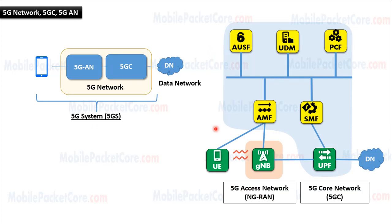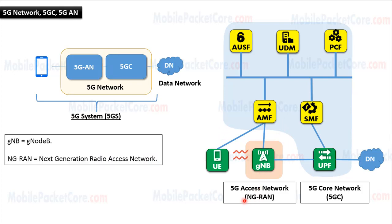This graph shows the 5G access network and the 5G core network. The name of the 5G access network is the Next Generation Radio Access Network, NGRAN. The node that works in NGRAN is the gNodeB. The gNodeB provides the radio interface to the UE. So, the function of the NGRAN is to provide the radio interface to the UE.